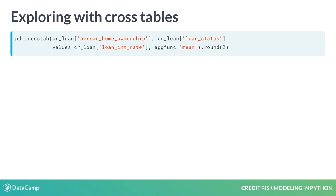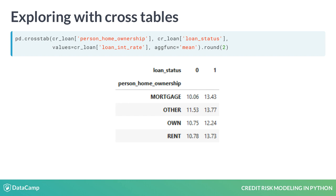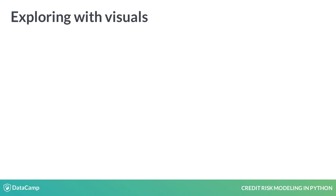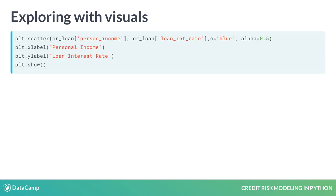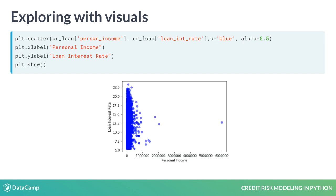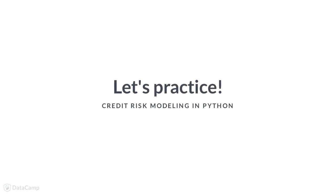We can use this function to help get a high-level view of the data similar to pivot tables in Excel. Here we see that the data has been grouped by loan status and home ownership, and then the average interest rate has been calculated. In addition to using crosstables, we can explore the data set visually. Here we use matplotlib to create a scatter plot of the loan's interest rate and the recipient's income. Just like the crosstable, plots help us get a high-level view of our data.